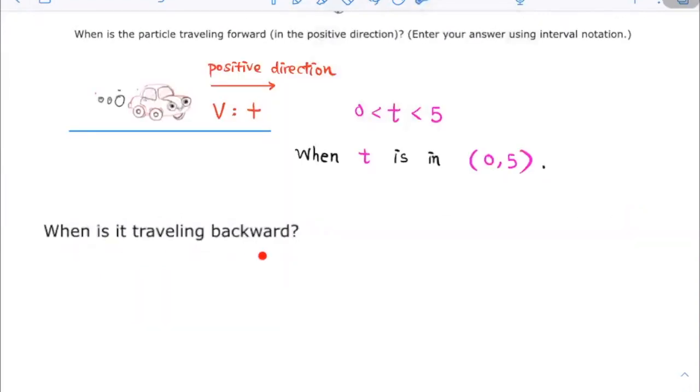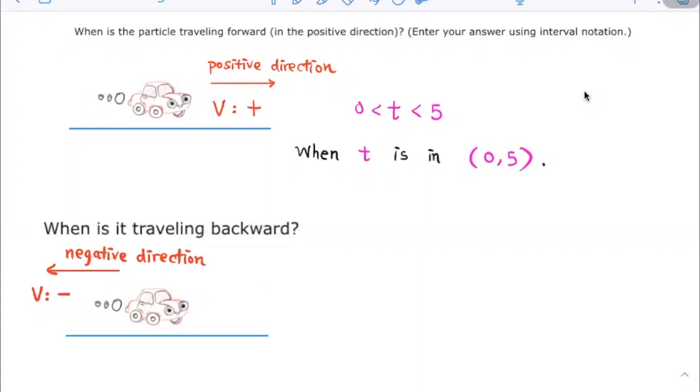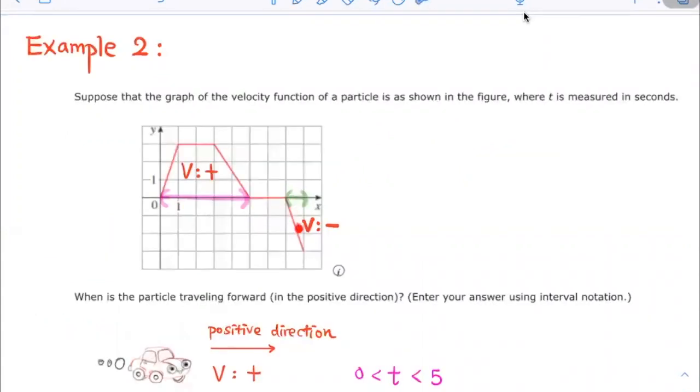When is it traveling backward? It is traveling backward when the object is traveling to the negative direction, which is when the velocity is negative. Looking at the graph over here,